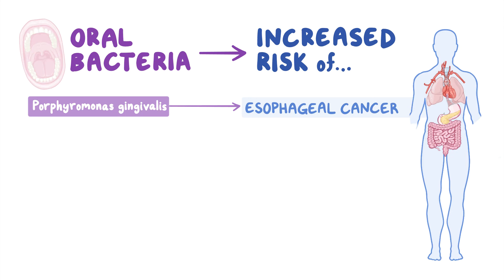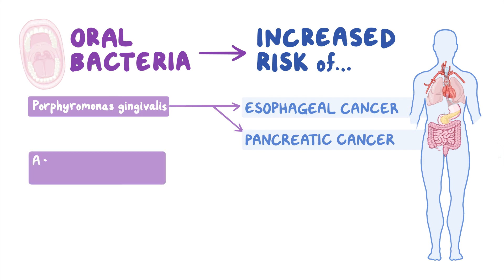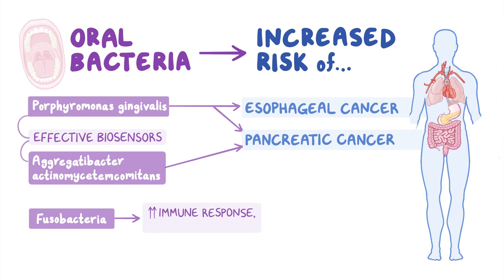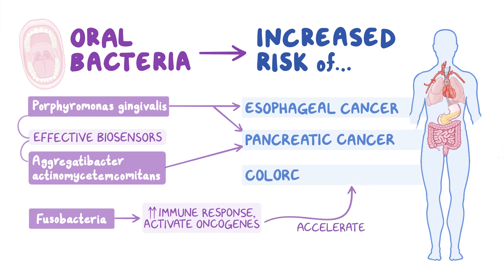P. gingivalis is also associated with a high risk of pancreatic cancer, along with Aggregatibacter actinomycetemcomitans, and they can be used as an effective biosensor for early diagnosis of pancreatic cancer. Fusobacteria is another genus of bacteria in the mouth that produces excessive immune responses and activates oncogenes. They can invade the bowel and cause inflammation that accelerates colorectal tumor formation.